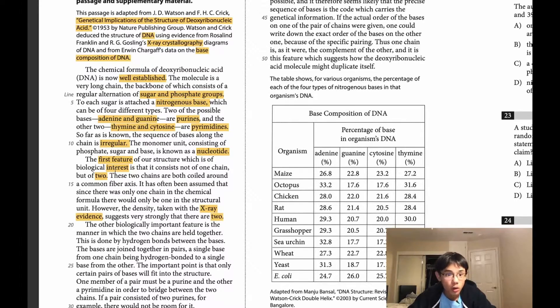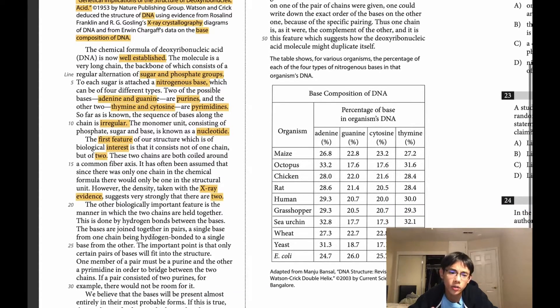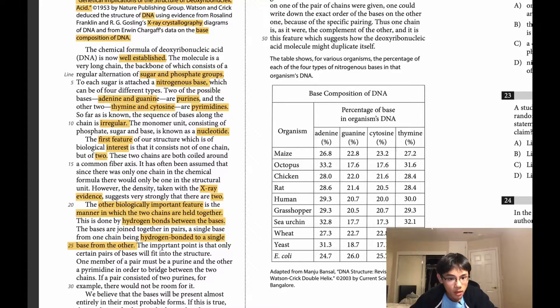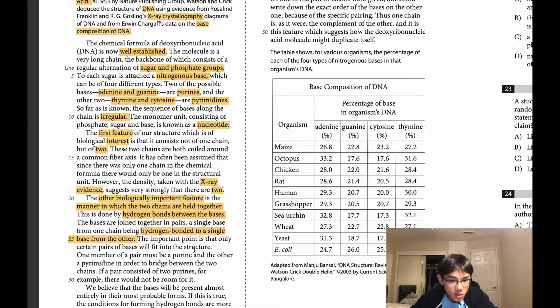The other biologically important feature. So in addition to this first feature of interest that we've already identified in the previous passage, there's actually a second one. So this is also another main idea that we have to understand. The other biologically important feature is the manner in which the two chains are held together. So this interaction between the two chains is also important to the overall structure of DNA. This is done by hydrogen bonds between the bases. So hydrogen bonds is what allows these two chains to interact. The bases are joined together in pairs. A single base from one chain being hydrogen bonded to a single base from another. The important point is that only certain pairs of bases will fit into the structure.